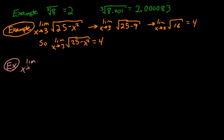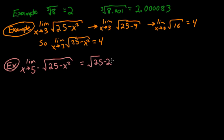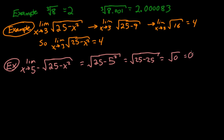Let's say we have the limit as x approaches 5 from the left of the square root of 25 minus x squared. This is going to be equal to the square root of 25 minus 5 squared, which is the square root of 25 minus 25, which is the square root of 0, which equals 0.